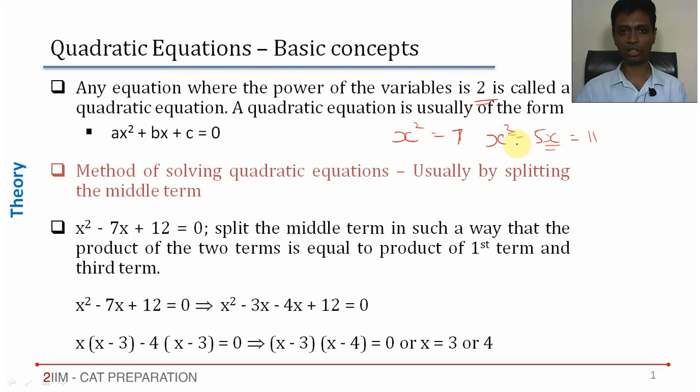We can have multiple variables, but usually as far as the CAT is concerned, we will usually be doing quadratic equations in a single variable. Keep that in mind, mostly we will have only one variable.